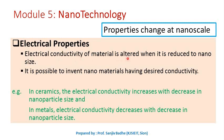Electrical conductivity also alters when a material is reduced to the nanoscale, and we can invent new nanomaterials with desired conductivity. For example, electrical conductivity of ceramics increases with a decrease in nanoparticle size, while for metals, electrical conductivity decreases with a decrease in nanoparticle size.